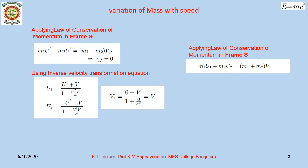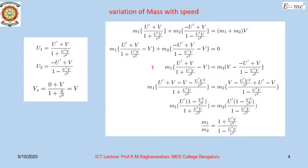According to the law of conservation of linear momentum for the observer in the frame S, we may write M1·U1 plus M2·U2 — the total momentum before collision — equal to (M1 + M2)·Vs'. Substituting the values of U1, U2, and Vs', we obtain: M1·(U' + V)/(1 + U'V/C²) + M2·(−U' + V)/(1 − U'V/C²) = (M1 + M2)·V.